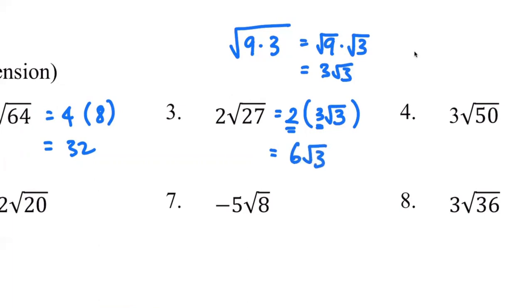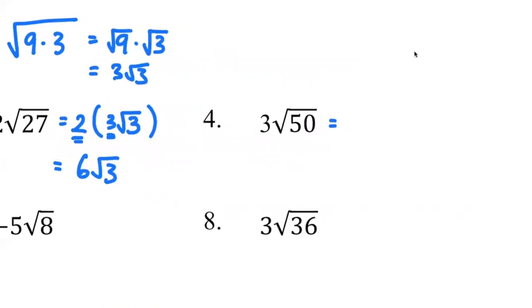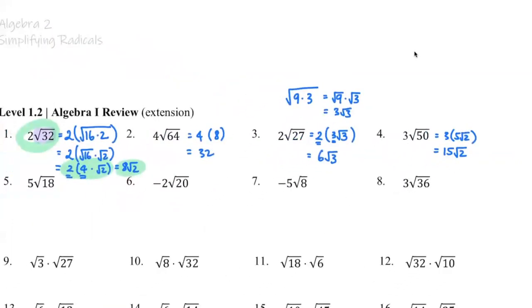For number four, it's 50. Whenever you see a number ending with zero or five, that gives you a really strong hint that it's going to be something related to 25 or 10. This is 25 times 2. So we have square root of 50 as 5 root 2, so that becomes 15 root 2. These four are pretty easy.